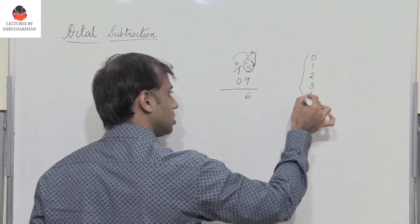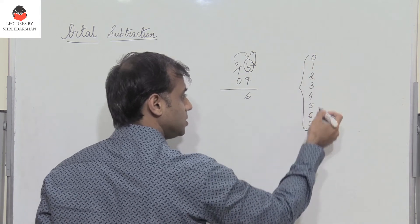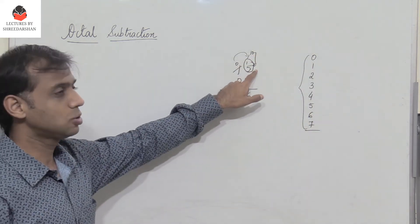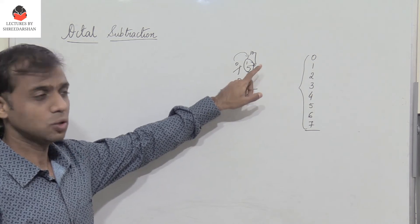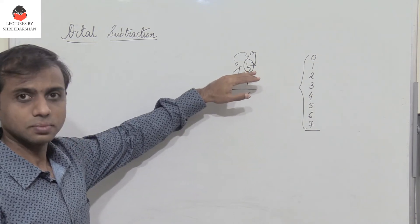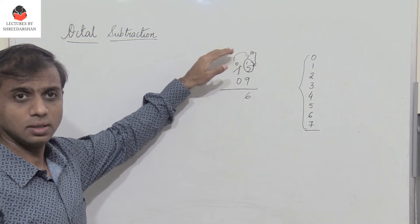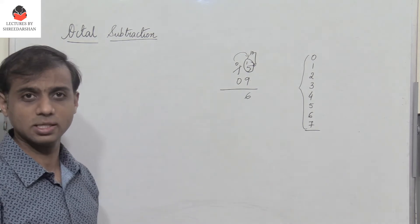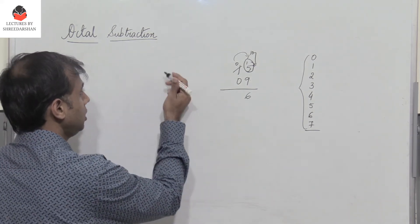In octal, we know that there are 8 digits varying from 0 to 7. So therefore we have to add 8 to the given number because the units place has a weight 8 power 0 and then you have 8 power 1, 8 power 2 and so on. So this is how the weights are for the digits in the octal.